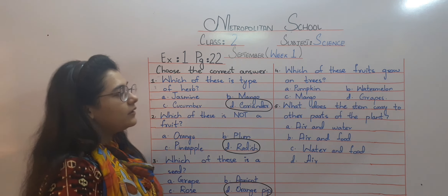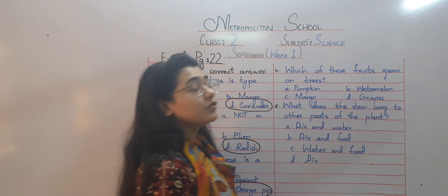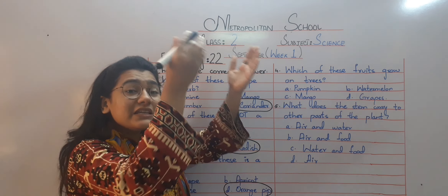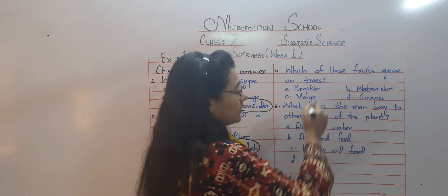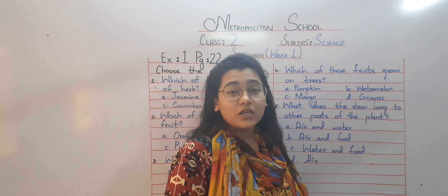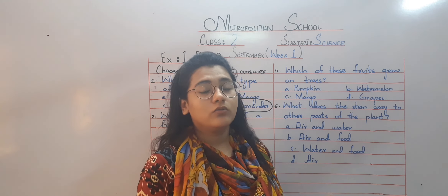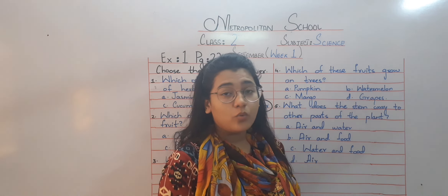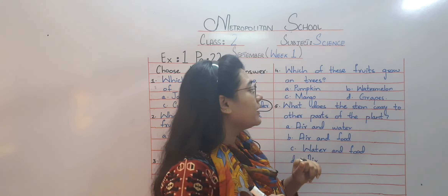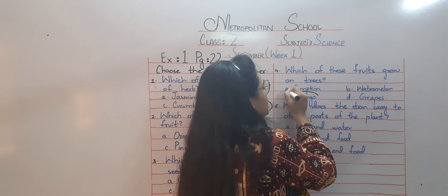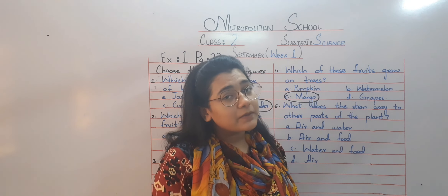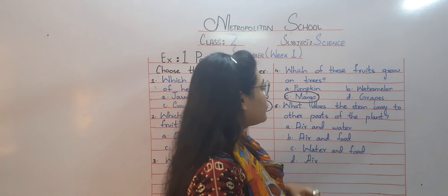Number four: which of these fruits grow on trees? The options are pumpkin, watermelon, mango, or grape. Pumpkin grows among creepers — those plants that spread on the ground. Watermelon is also a creeper. Grape does not grow on trees either. So the answer is mango — mango grows on a tree.